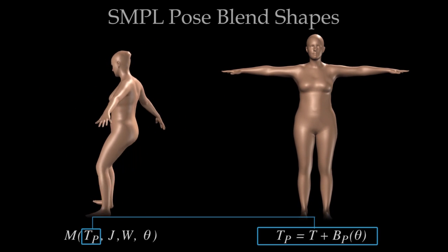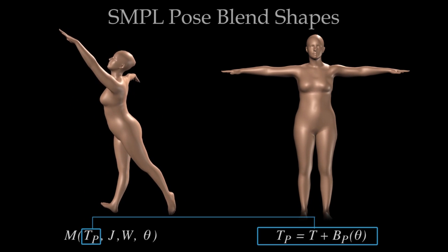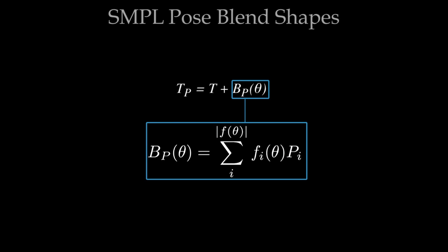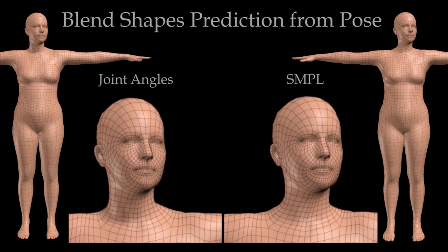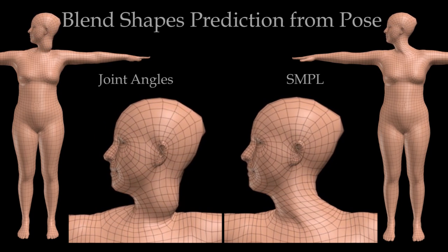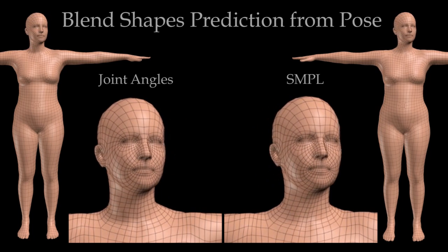Notice how the static mesh deforms, particularly at the elbows, shoulders, and hips, to compensate for the soft tissue deformations that occur due to pose. The pose blend shapes P_i are linearly combined and added to the template vertices. A key novelty of SMPL is that the coefficients F_i correspond to the elements of the part rotation matrices. On the left, we show blend shapes predicted directly from joint angles theta — this naive approach produces serious artifacts. On the right, we show SMPL blend shapes predicted from elements of rotation matrices.